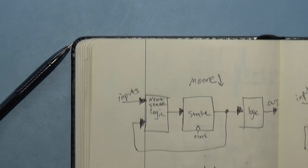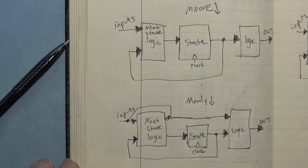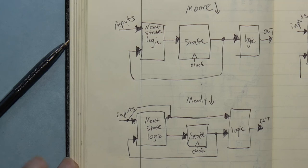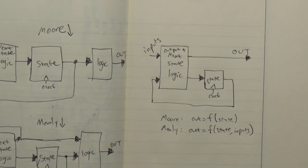In a Mealy machine, the outputs depend on the current state and the inputs. Here, I'm going to pull this output logic block into the next state logic block. Now you can see that the Moore is just a special case of the Mealy.